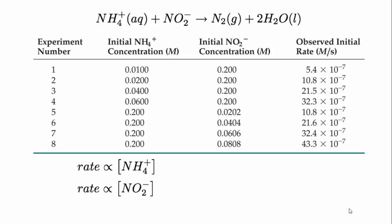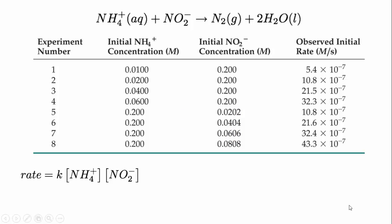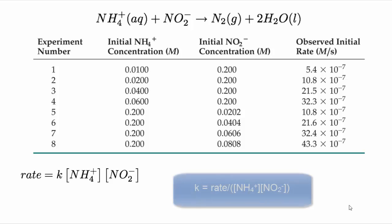Knowing these two things, we can say the rate must be proportional to the product of these two concentrations. To convert this expression into an equation, we need to multiply the concentrations by a proportionality constant — the rate constant — that gives us the actual value of the rate. To find the rate constant, we use our rate law: rate equals K times the concentration of ammonium times the concentration of nitrite. Rearranging gives K equals the rate over the concentration of ammonium times the concentration of nitrite. We have values for those three variables, so we can plug them in to get K.